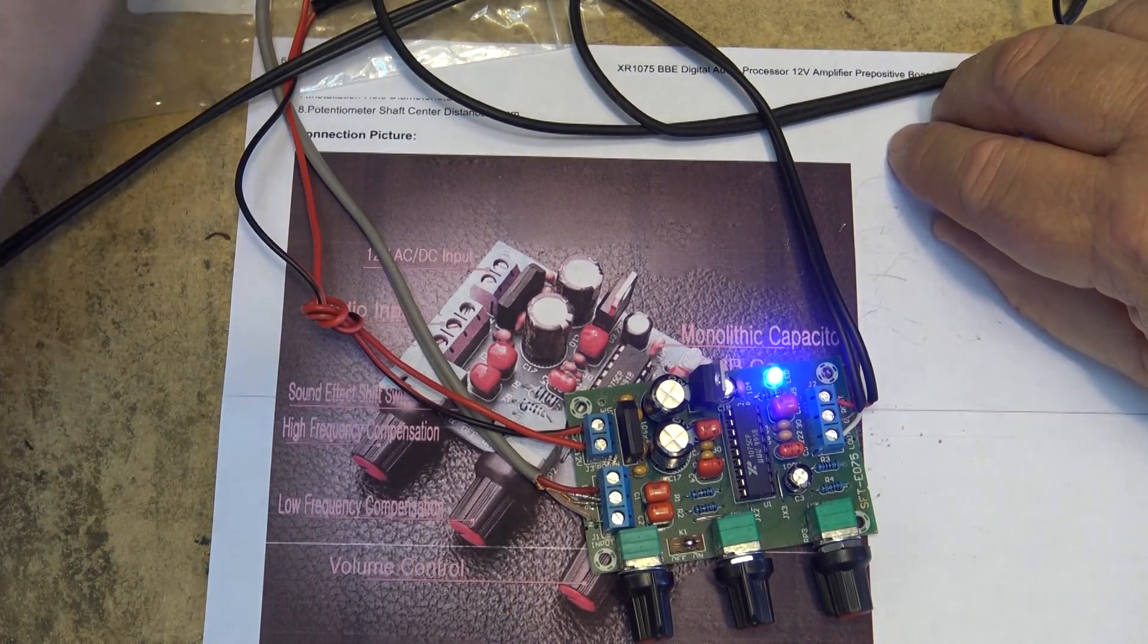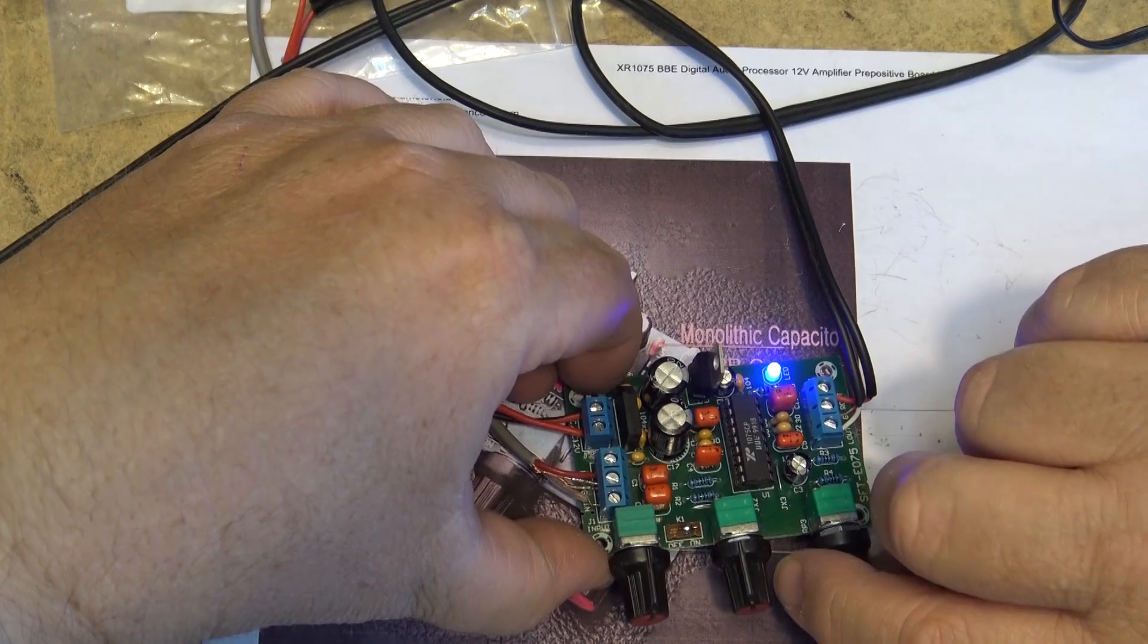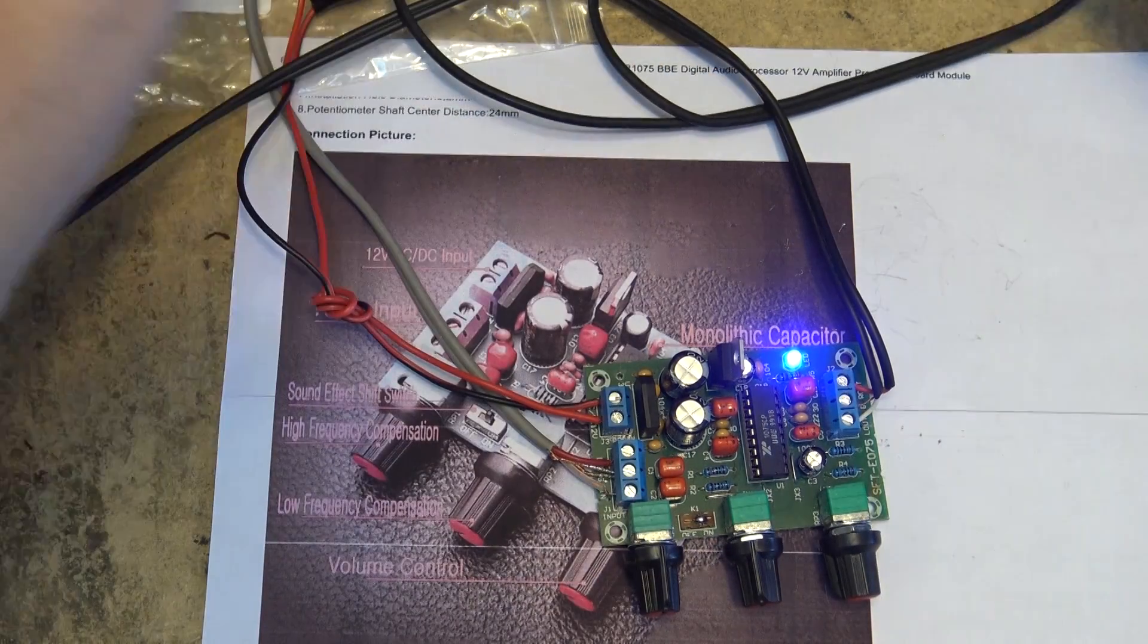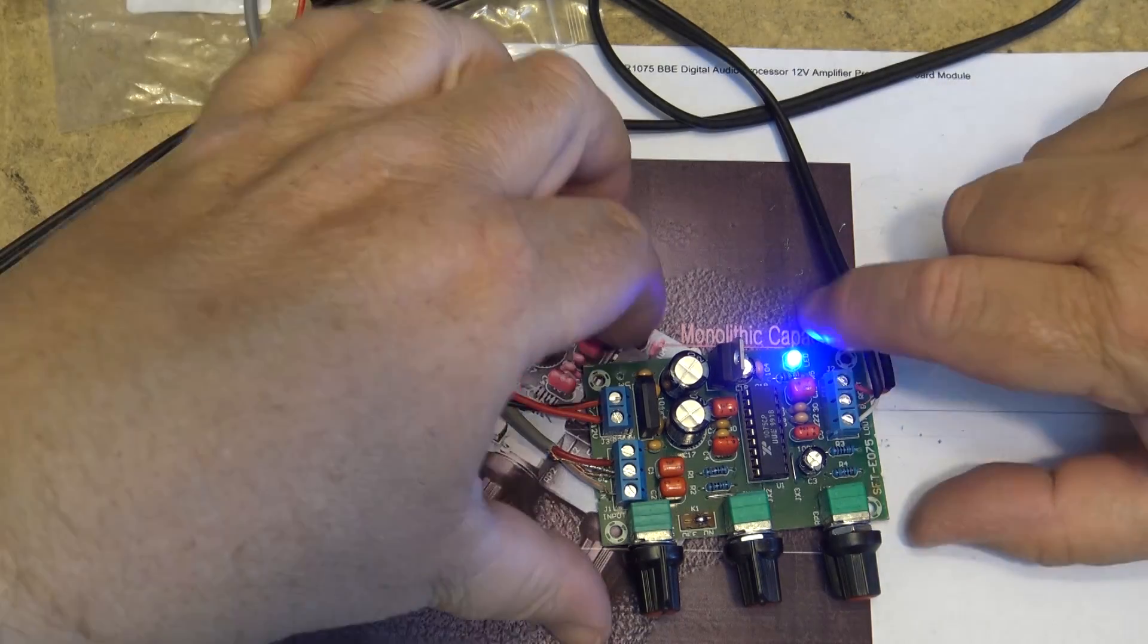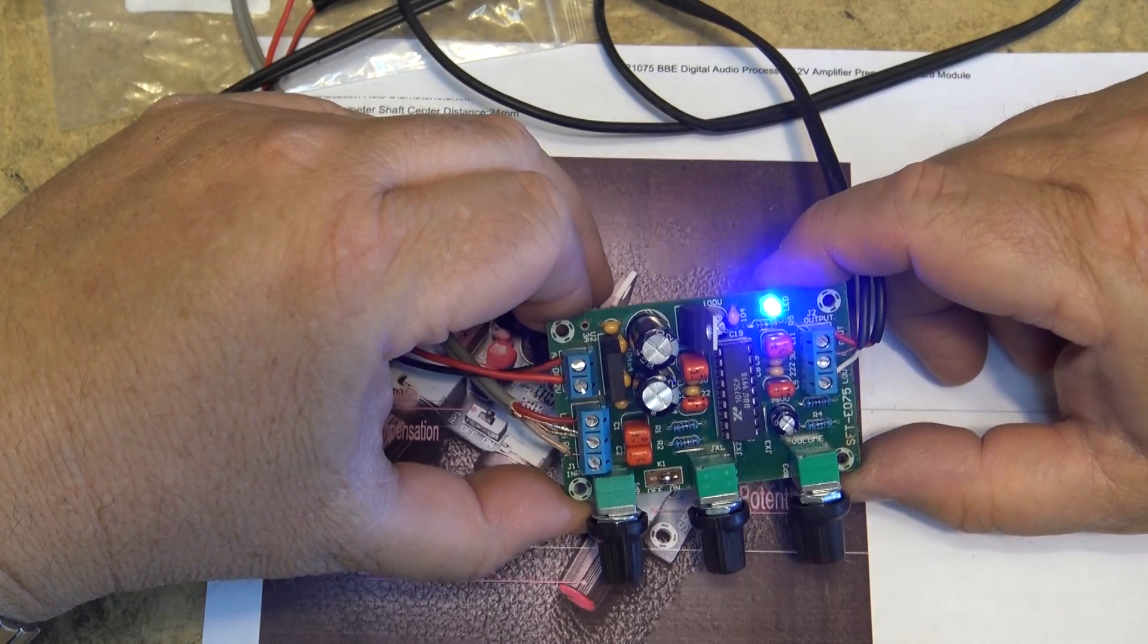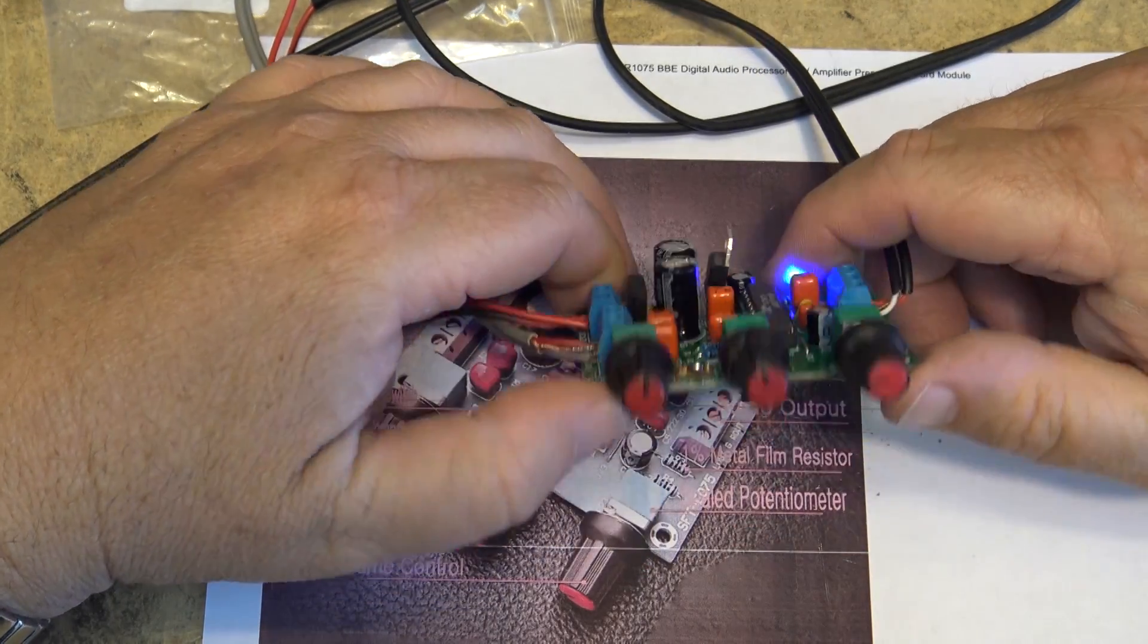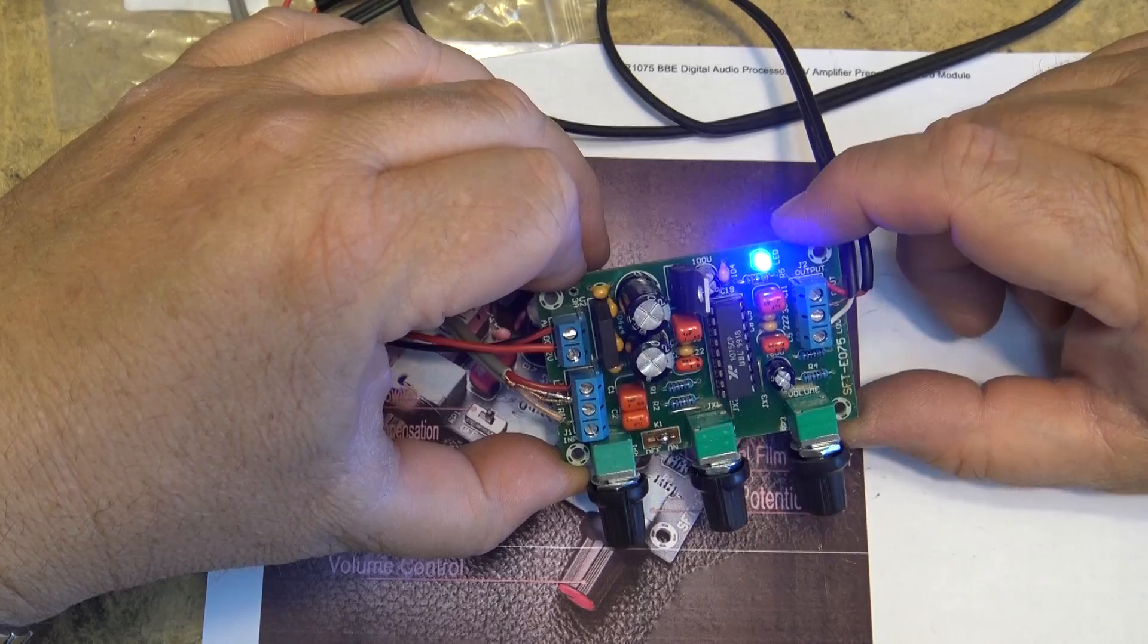That's a little XR1075 BBE Digital Audio Processor that I got from IC Station. A neat little unit. It could be exactly what you may need for your audio projects. And that's what this little series is about, showing off these little modules. So you guys get an idea of what's out there and if you're building projects, whether this may be suitable for you. Basic little control amplifier with bass and treble.